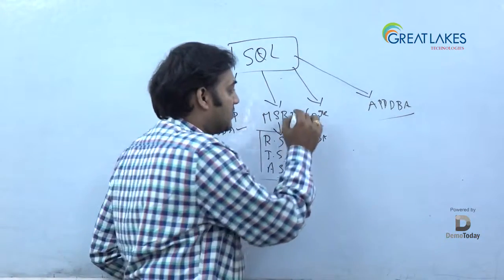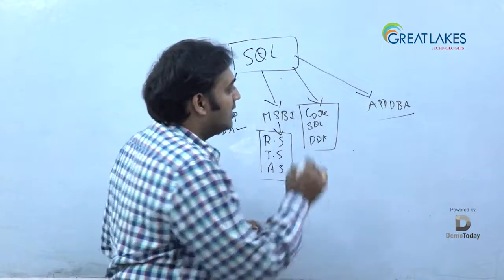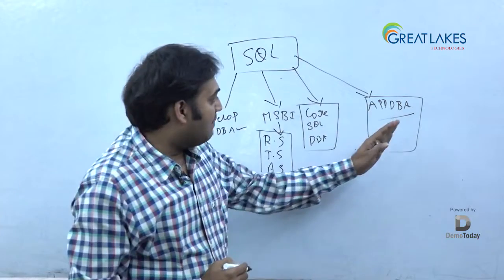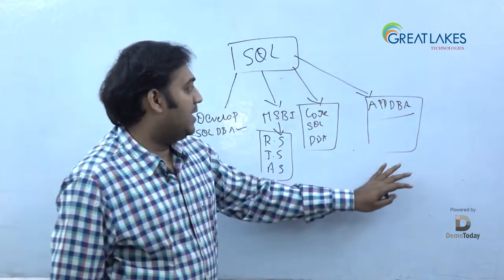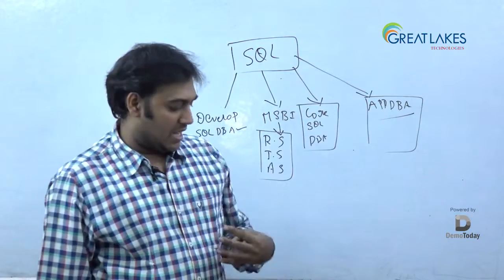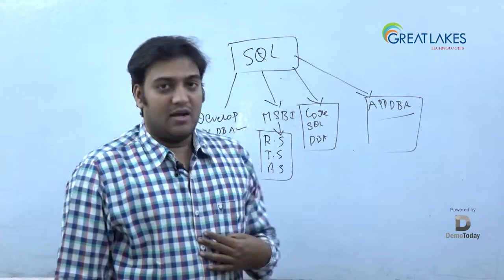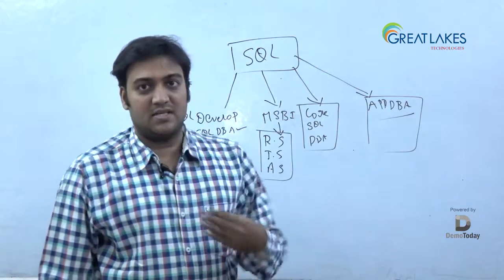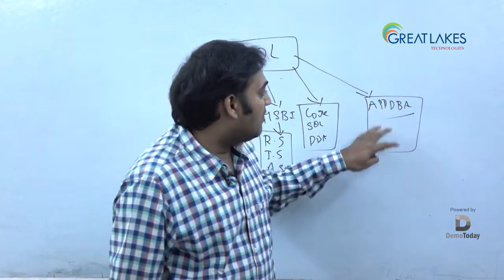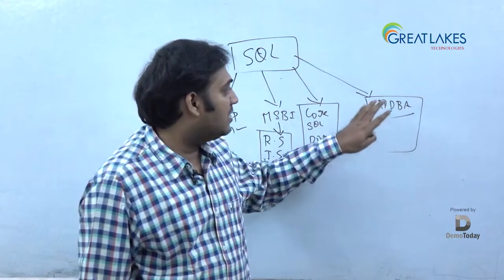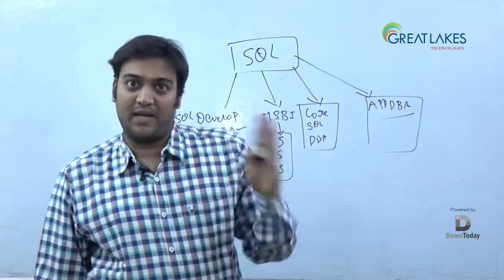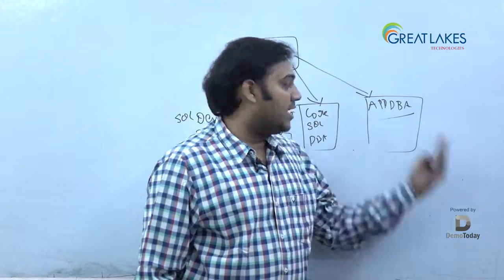Third category is Actual Core SQL DBA. And there is something called App DBA. Let me explain the difference between App DBA and Core SQL DBA. When I talk about App DBA, here it is mostly depending on application. When I am a DBA, actual meaning is database administrator. When I say App DBA, I am more focused about application.